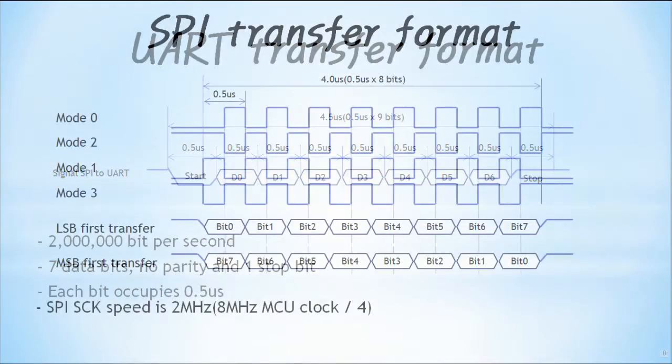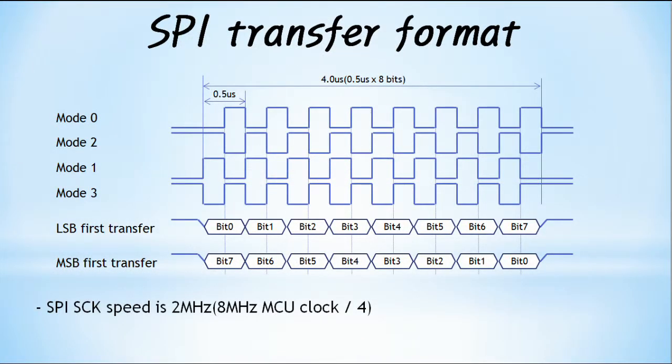Since SPI is synchronous communication, it transmits and receives data bits in synchronization with a clock. In master mode, input and output serial data are synchronized with a clock. In slave mode, input and output serial data are synchronized with the clock transmitted from the master. SPI communication speed means the speed of SCK, and serial data is input and output synchronized with SCK.